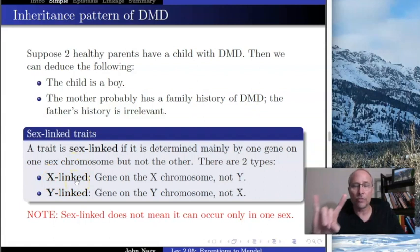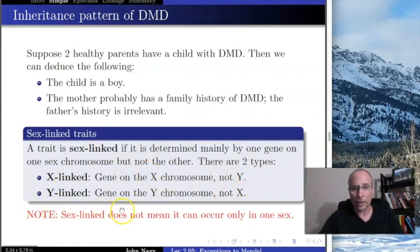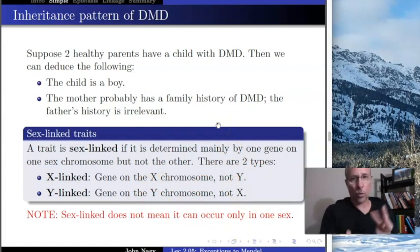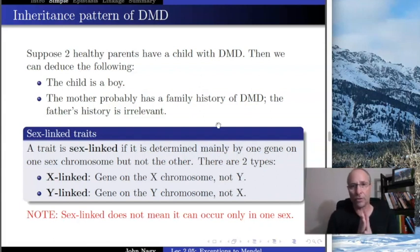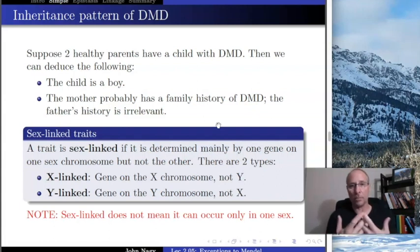That means there are two different types of sex-linked traits: X-linked, which are traits carried on the X chromosome but not the Y; and Y-linked, which are traits carried on the Y and not the X. X-linked traits are far more interesting from this perspective than Y-linked traits.